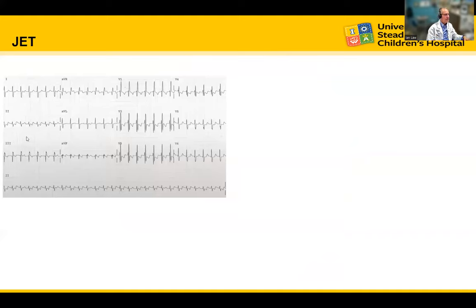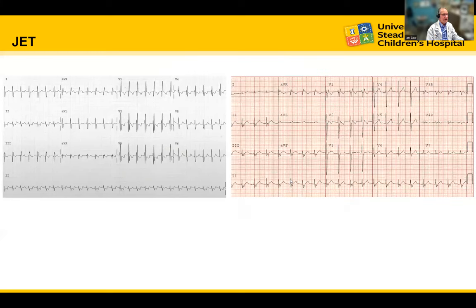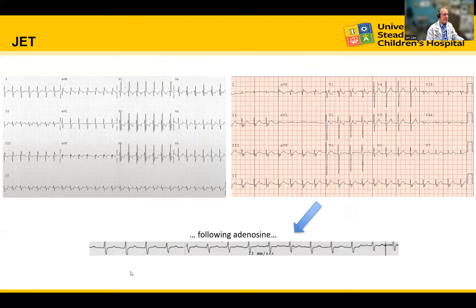Here are some examples of JET by EKG. In this top left panel, we see a narrow complex tachycardia — in lead two, P waves are seen sometimes and then drop off. With this variable conduction, one would make the diagnosis of JET. In another example, a narrow complex tachycardia with a retrograde P wave just following the QRS. Given adenosine, the P waves begin marching through the narrow QRS complex, confirming the diagnosis of junctional ectopic tachycardia.